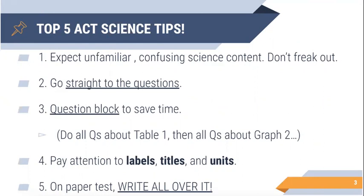Number two: go straight to the questions. Typically the passages are going to be very high level, and it is not a good use of your time to read word for word. Number three: question block to save time. Do all the questions about the first table, then all the questions about the second table, then all the questions about the third table. They put the questions in different order to confuse you — they'll mix questions about table one and table two. I don't recommend going straight through the questions in order.